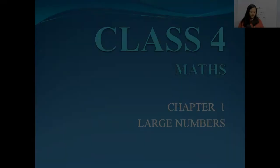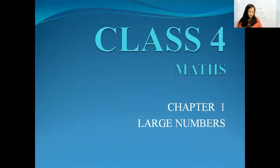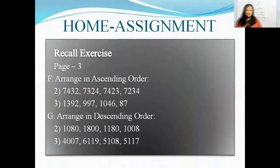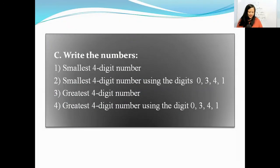For your assignment, chapter 1, question number C, page 3, F. Number C, page 3, write the numbers. 1, smallest 4-digit number. 2, smallest 4-digit number using the digits 0, 3, 4, 1.